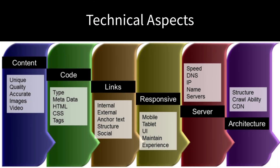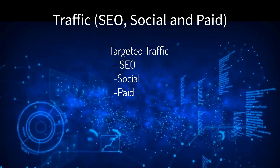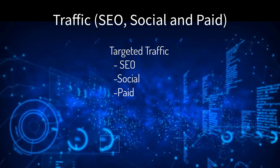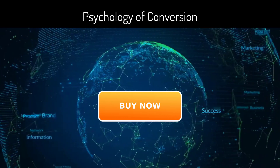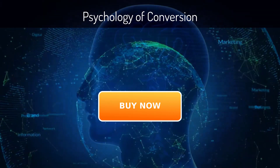Of course, all online marketing must have three elements in alignment: the technical aspects — servers, layout, code structure; the traffic — SEO, social, and paid; and the psychology of conversions.